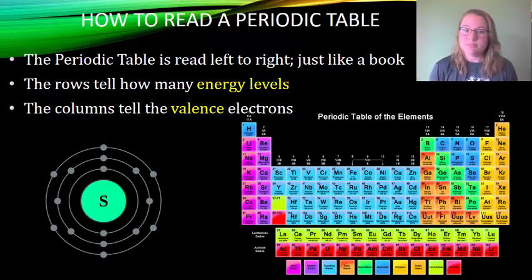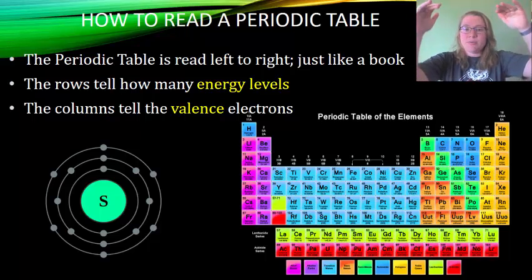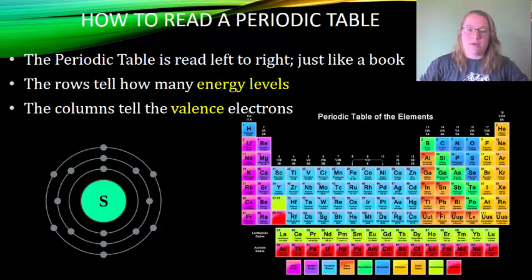The number of energy levels is smallest if the element is found at the top of the periodic table and there are more energy levels as you go down. The number of valence electrons, there's fewer on the left hand side and more on the right. When we're talking about energy levels and valence electrons, we're talking about the electrons that are flying around the outside of the atom.